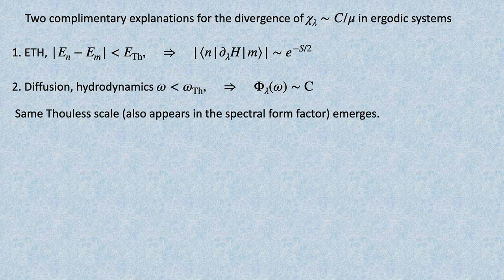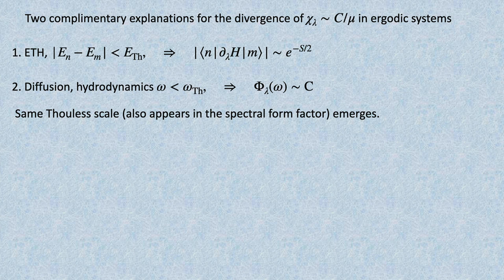So there are two completely complementary explanations for the same result. Instead of saying fidelity susceptibility is e^S—meaningless in the classical thermodynamic limit—I say that with asymptotic result as cutoff mu goes to zero, my chi should behave as 1/mu. This is the result for ETH ergodic systems. One explanation is purely quantum mechanical—ETH makes matrix elements energy-independent. Another is diffusion, hydrodynamics—spectral function is constant. It's the same result.